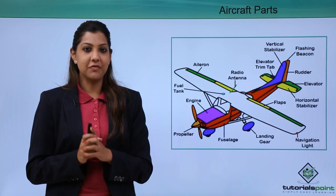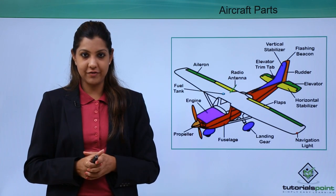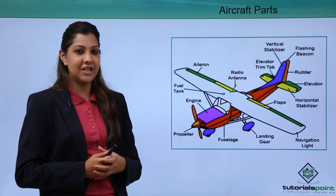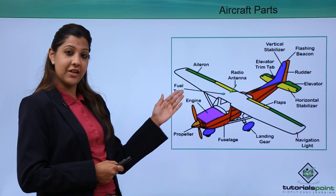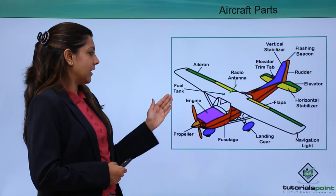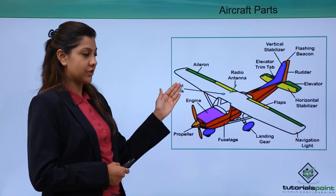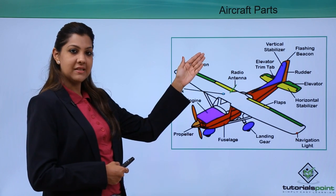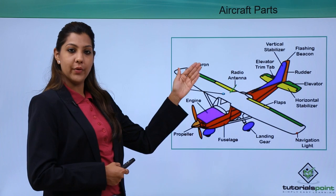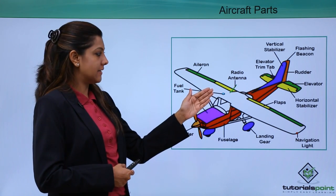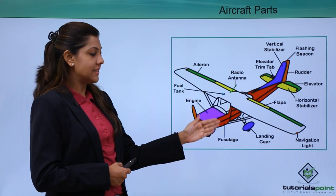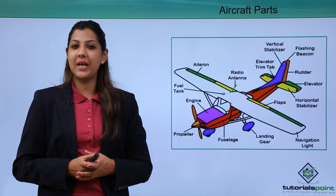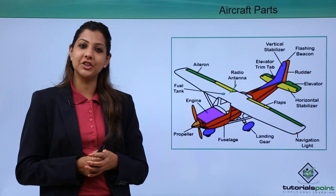Now we come to an important part of this module: understanding the different exterior parts of the aircraft. The exterior parts include the propeller, engine, fuel tank located in the wing, ailerons, radio antenna, elevator trim tab, vertical stabilizers, flashing beacon, rudder, elevator, horizontal stabilizer, flaps, navigation light, landing gear, and the fuselage — which is the body of the aircraft.